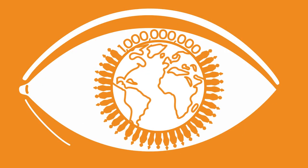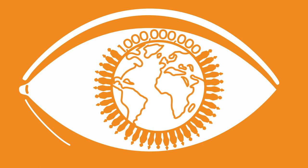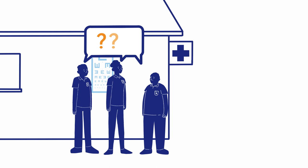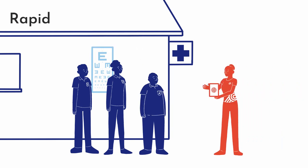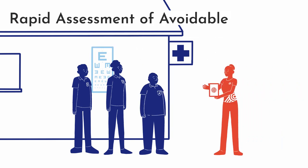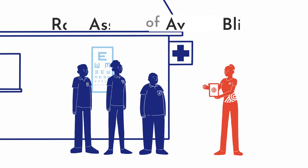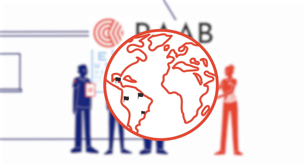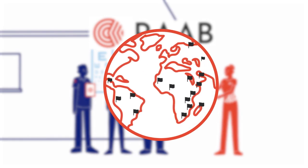Over a billion people worldwide live with unaddressed sight loss and blindness. To meet this challenge, Eye Health Services need to know how many people in their area have poor vision and what they can do about it. The Rapid Assessment of Avoidable Blindness provides this information and is the most widely used Eye Health Survey method globally.